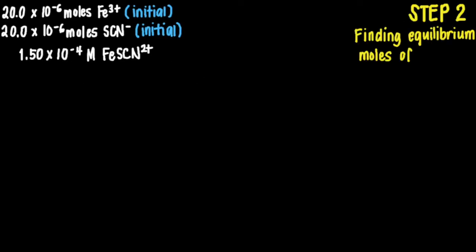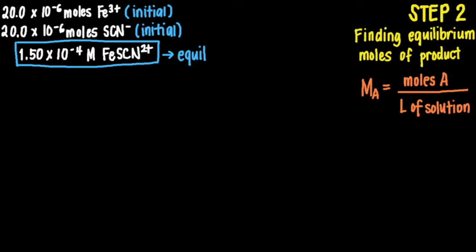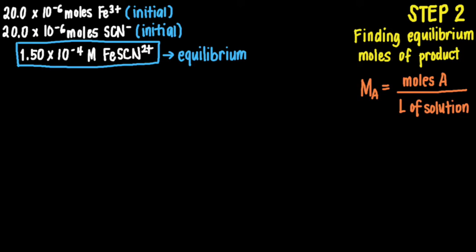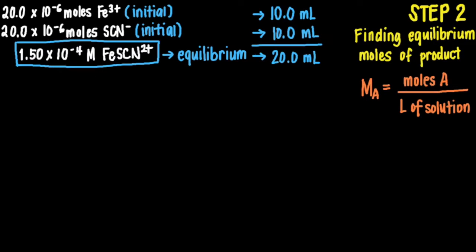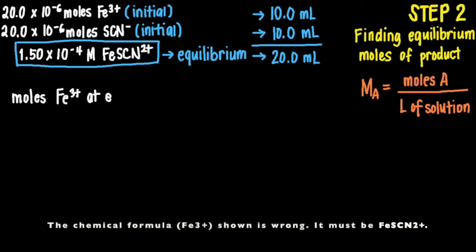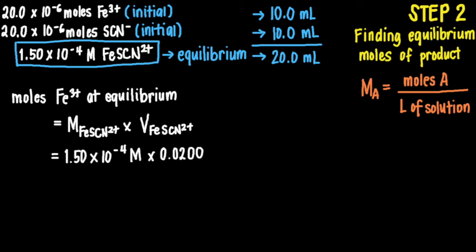For Step 2, we use the same equation but in a different context. The given concentration of iron-3-thiocyanate ion is its concentration at equilibrium, after mixing the two reactants. The total volume after mixing is 10 ml plus 10 ml, so 20 ml. To get the moles of iron-3-thiocyanate ion at equilibrium, we multiply 1.5×10⁻⁴ molar by 0.0200 liter, giving us 3×10⁻⁶ moles.